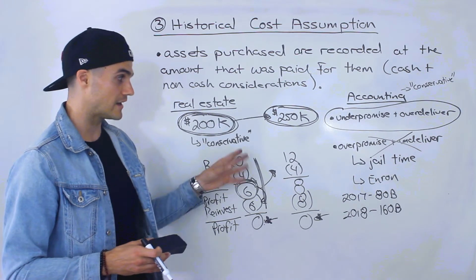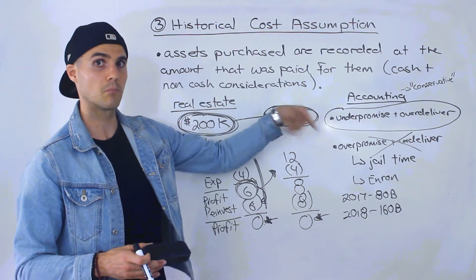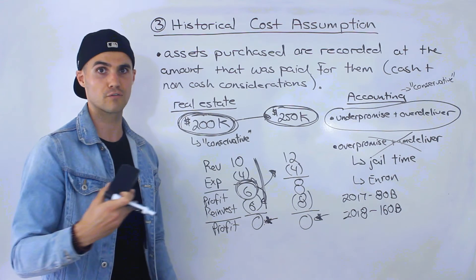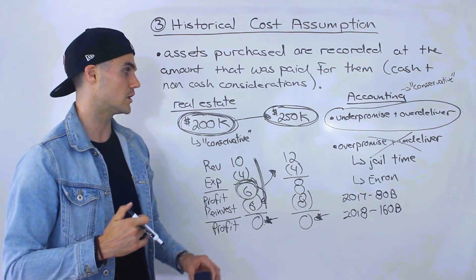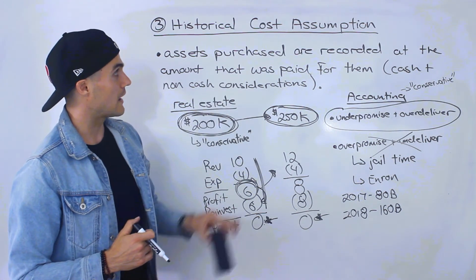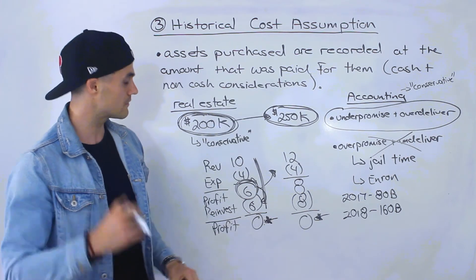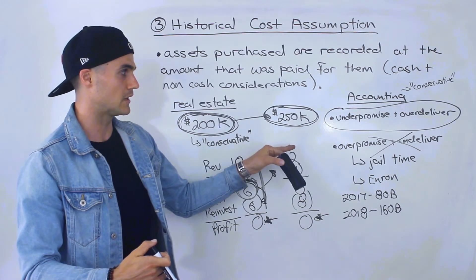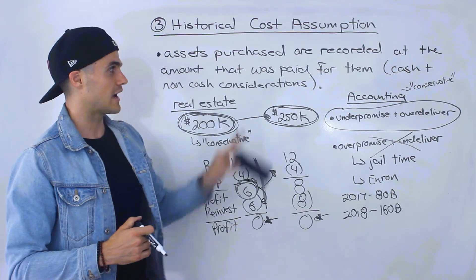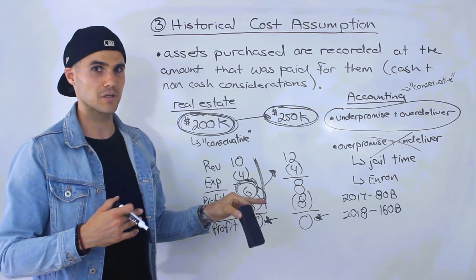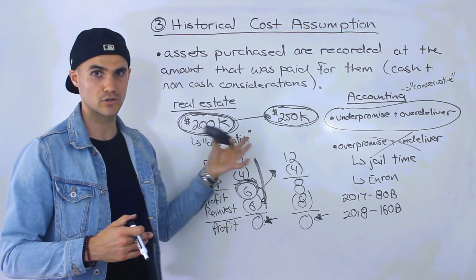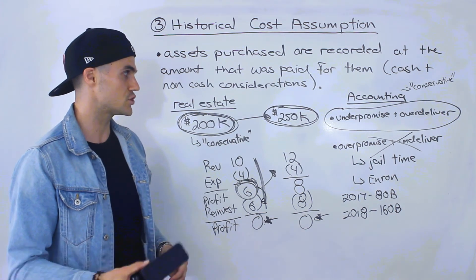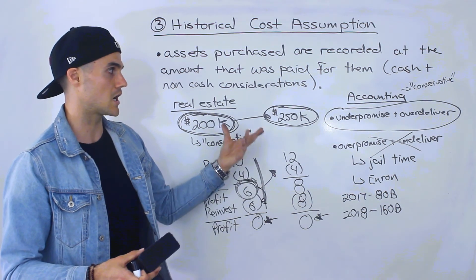But if you could find a company like Amazon now — where they're under-promising but you're confident they're going to over-deliver in the future — and you analyze their financial statements and income statements and do diligent research, you could be confident in investing in them for the long run. Eventually the market will value them properly, and you can make a good return. That's a cool result that can come out of the historical cost assumption. I wish someone had told me this when I was first learning accounting, because I wasn't thinking about how it could be applied to investing. But if you think about it from an investor's point of view, you can appreciate it a lot more.